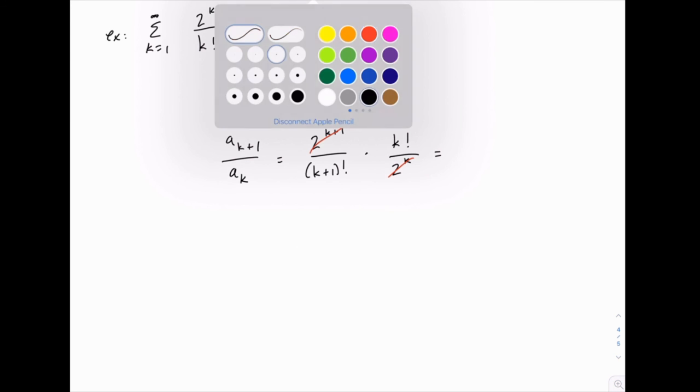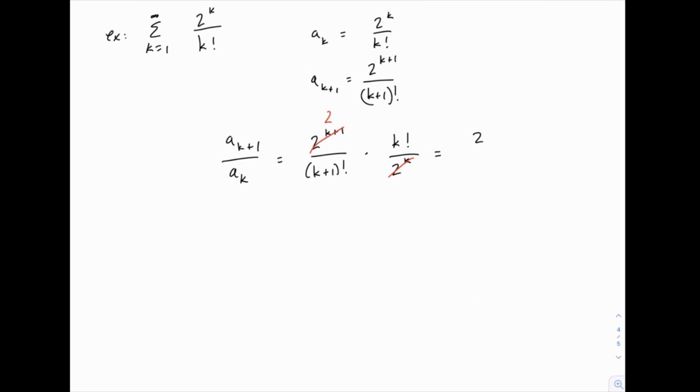So we'll have a 2 in the numerator, and then the k factorial and (k+1) factorial will cancel in the same way as we saw in the last example. So we'd have k+1 in the denominator.